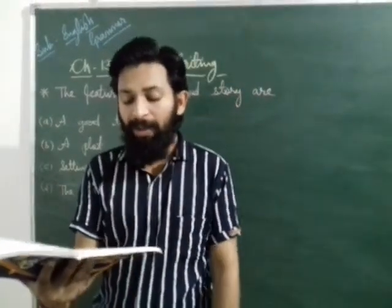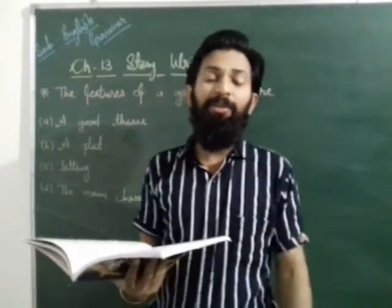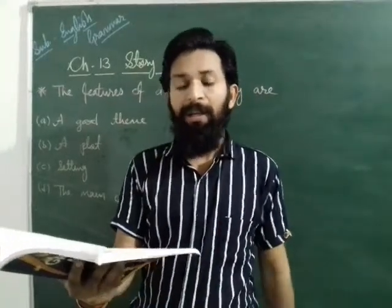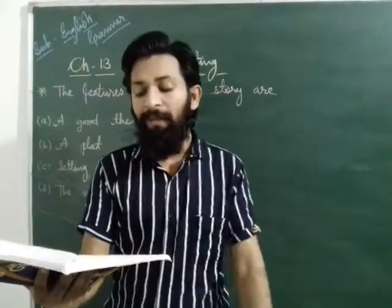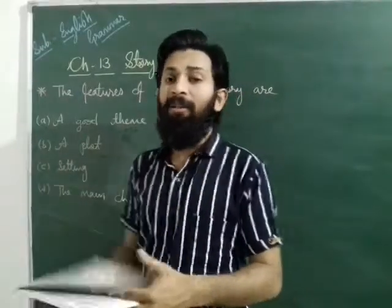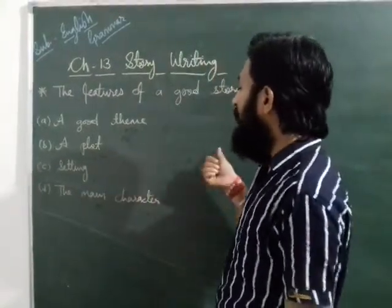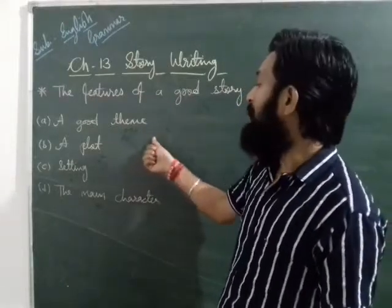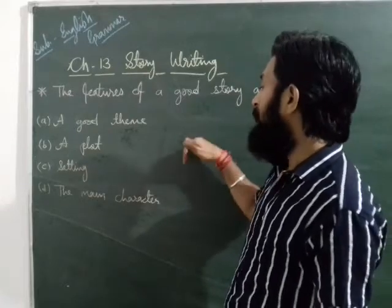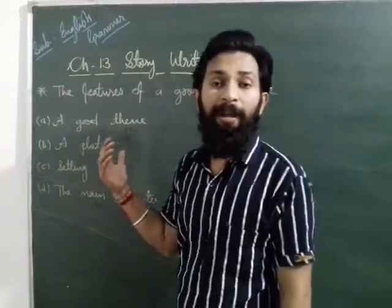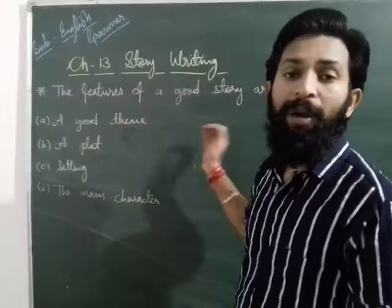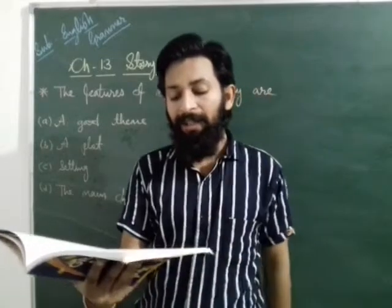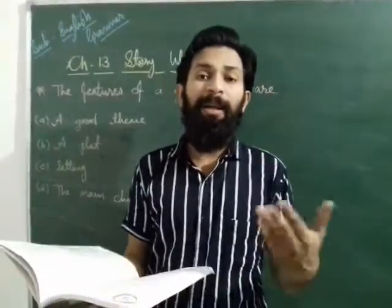The second point is that a story can be written in three ways. As you know, from the fourth class you have been writing stories, and it can be done in three ways. First, it can be developed from given outlines — many times the teacher writes outlines and you have to write the complete story using them. You read the outlines and fill in the sentences using your own creativity. Second, it can be based on a moral.